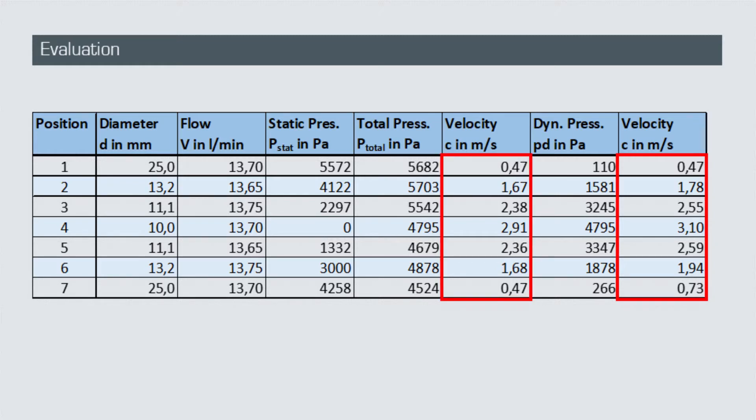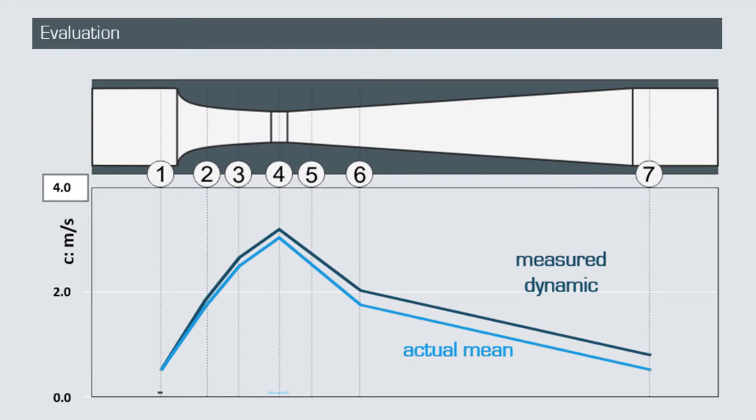Let's see how the experiment compares to the theory and voila, not too bad. The deviations you see are mainly caused by the internal flow profile inside the Venturi nozzle.